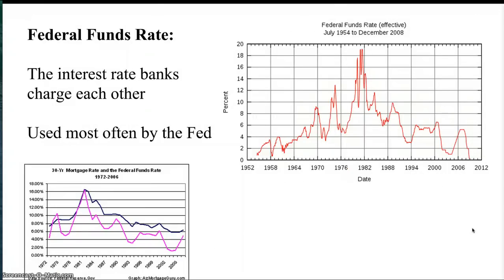Finally, the most important tool the Fed uses is called the Federal Funds Rate — the interest rate that banks charge each other when they borrow money. This is the rate the Fed tries to adjust most often. Looking at the Federal Funds Rate over the last 50-plus years, there has been quite dramatic change — going from quite high to now almost zero percent — which basically means banks can borrow money for free, a result of the financial crash of 2008.